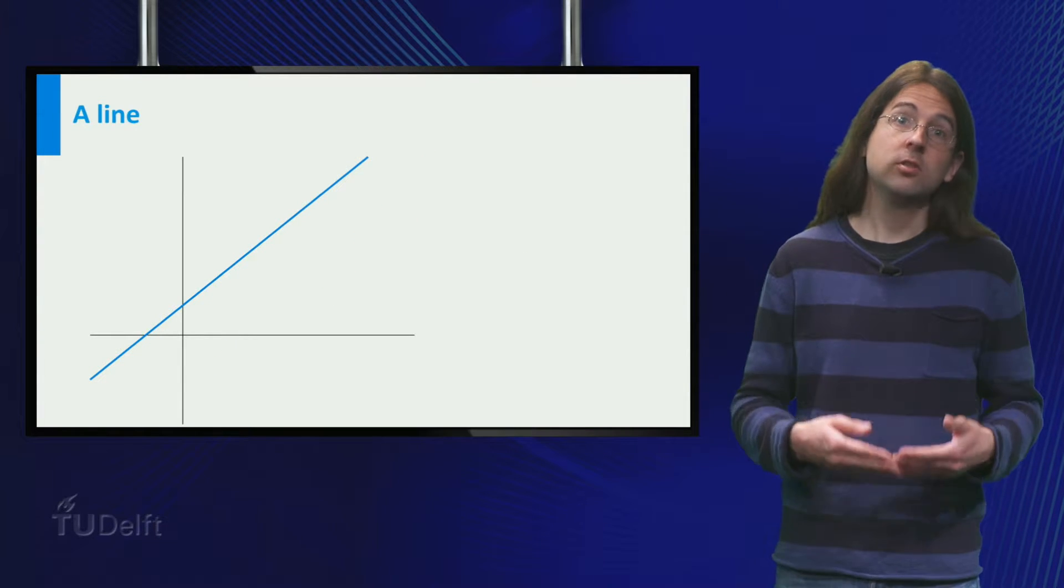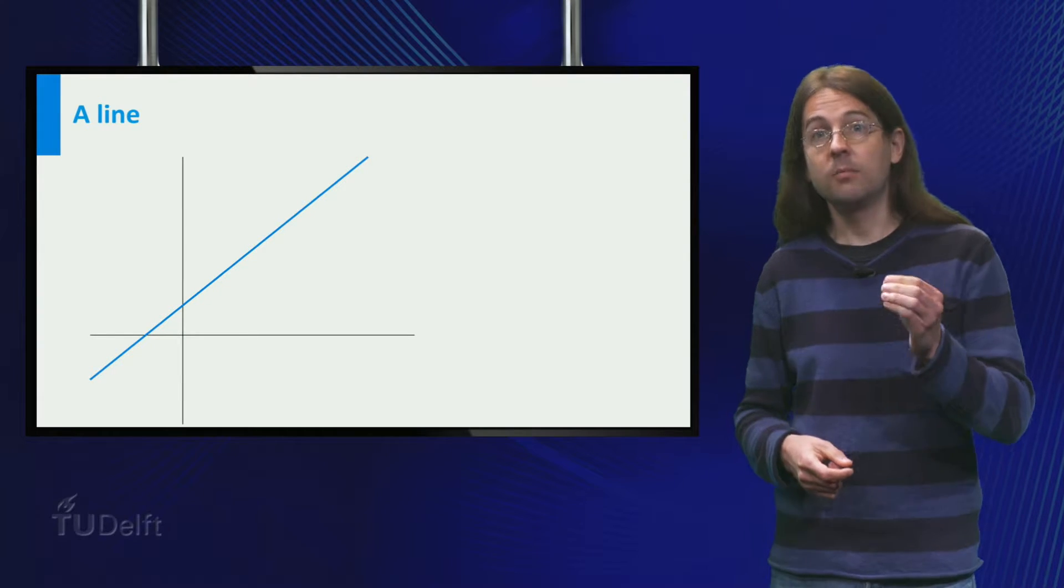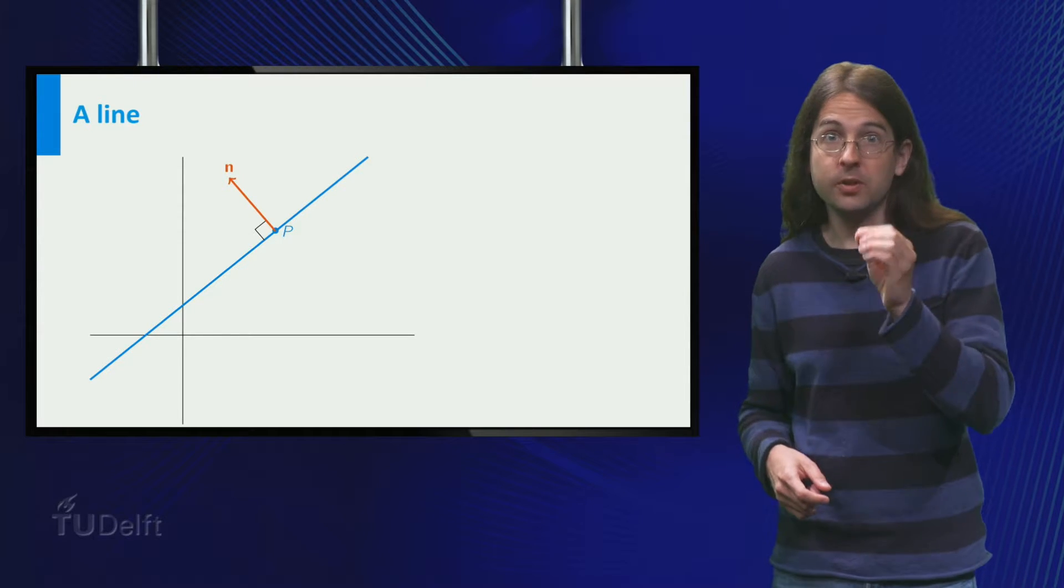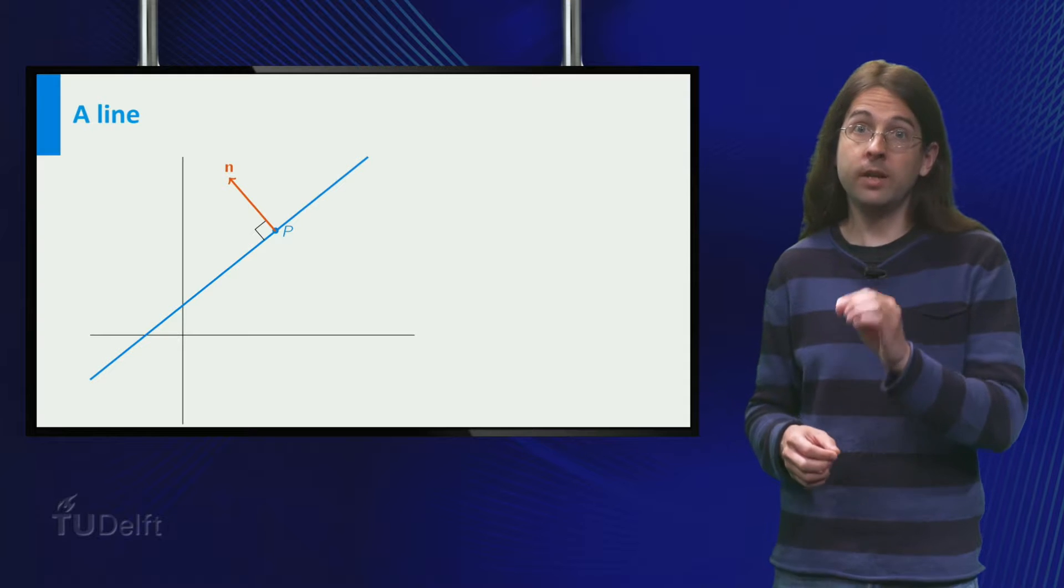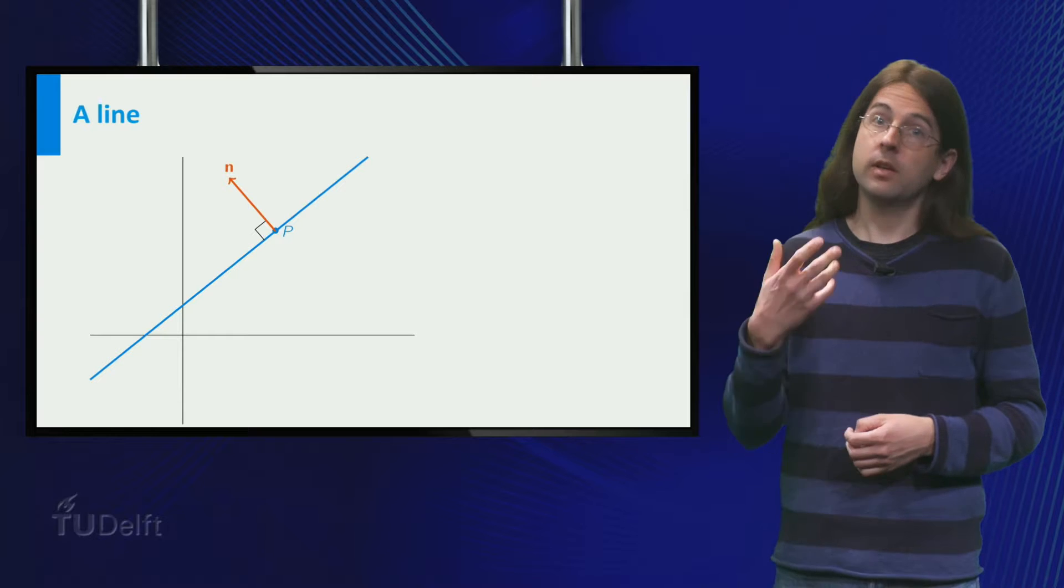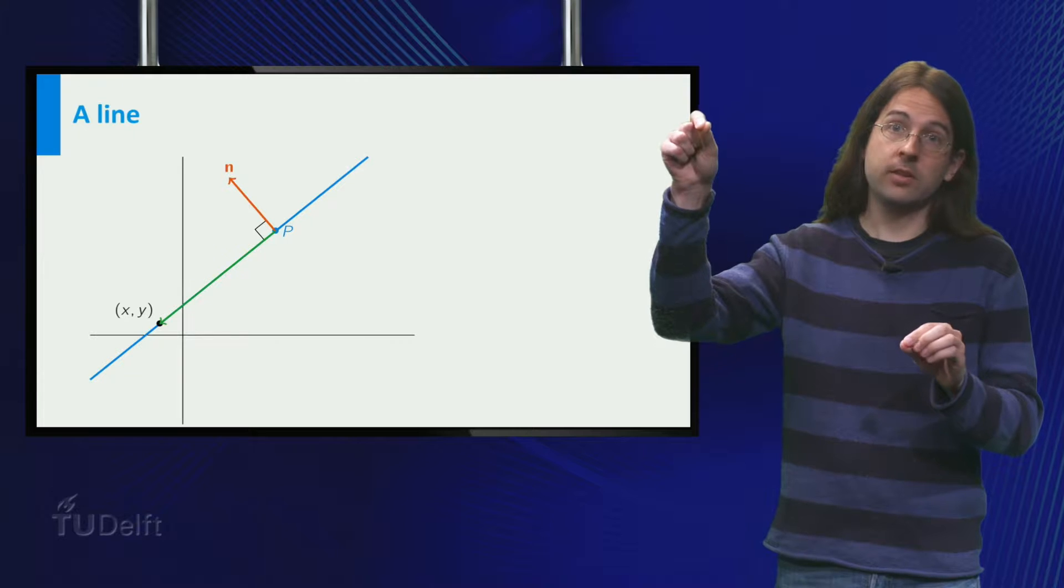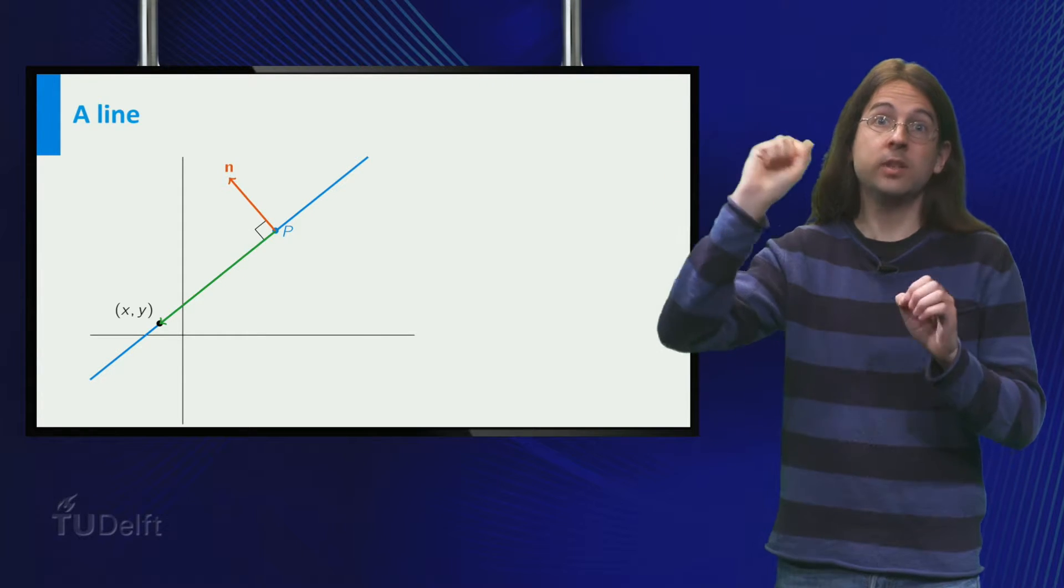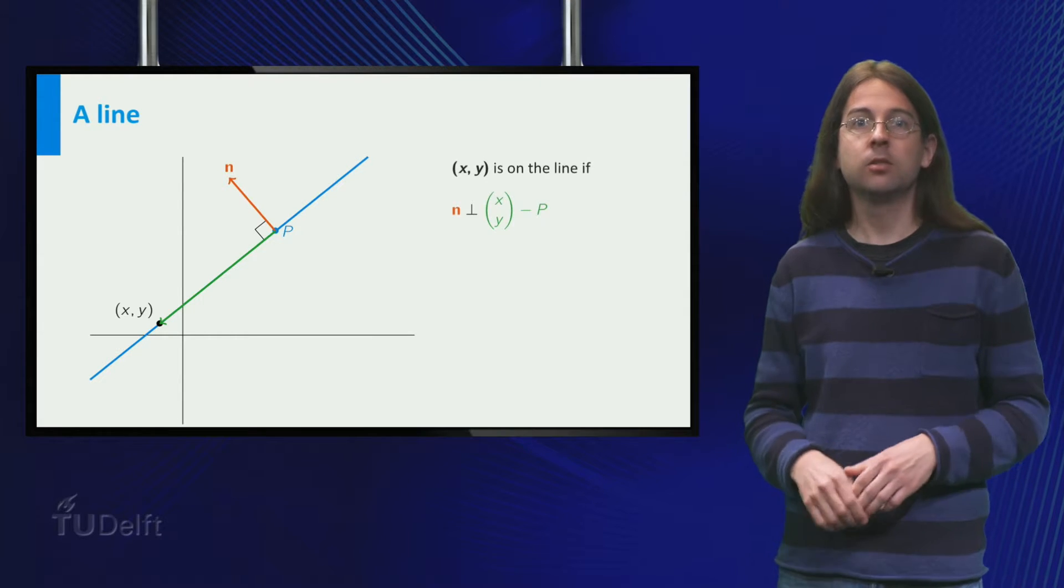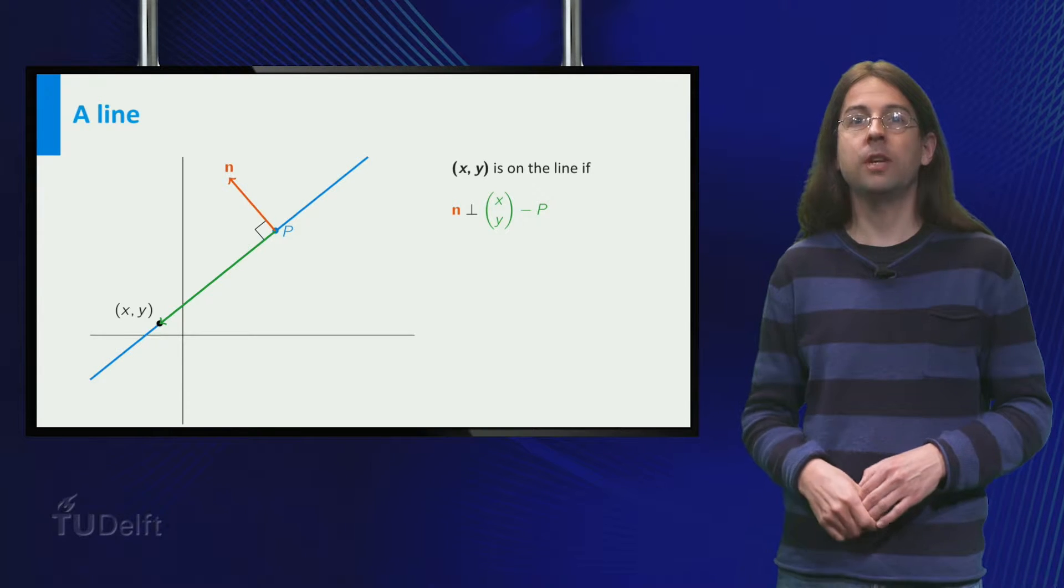Suppose you have a line and you want to find its equation. The main feature is that we need a vector n equals ab perpendicular to the line. We call n the normal vector. Take a point p and then another point x, y is on the line if the vector x, y minus p points in the direction of the line. This means that n is perpendicular to the vector x, y minus p. So their dot product should equal zero.